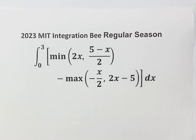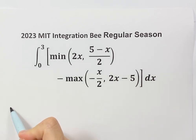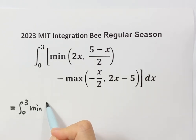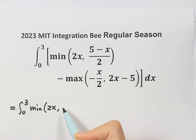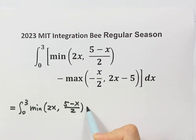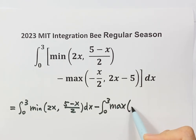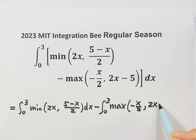First, we can separate this integral into two parts. So from 0 to 3, the minimum of the first function 2x and the second function 5 minus x over 2. Then we separate out from 0 to 3, the maximum of the first function negative x over 2 and the second function 2x minus 5.